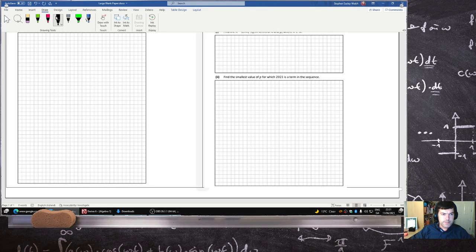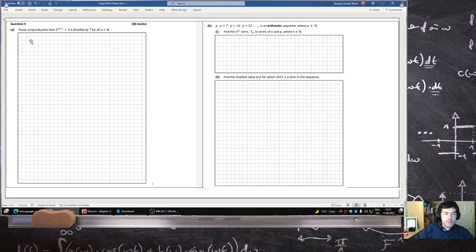Okay, let's have a look here. Prove that that's divisible by 7. So first you prove it for the first case n is 1.